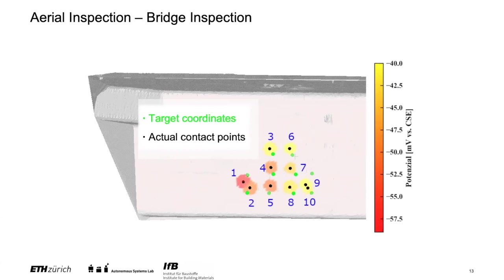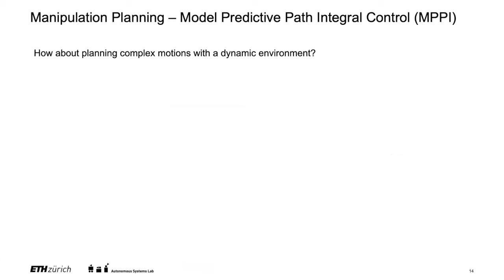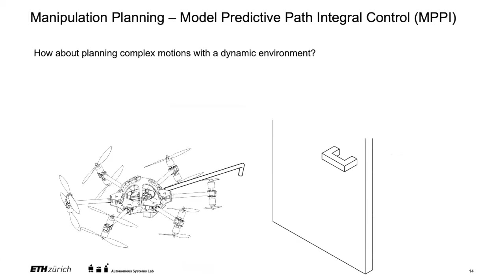We are now working more on complex interaction tasks, moving into manipulation planning. We started using the Model Predictive Path Integral (MPPI) control approach. Our example task is opening a door — quite complex for a drone because the door is moving but constrained in its movement, we need a hook to engage the door handle, and the drone must remain stable while opening it. A standard control approach is quite difficult for this, so we use MPPI, a sampling-based receding horizon planner similar to MPC.